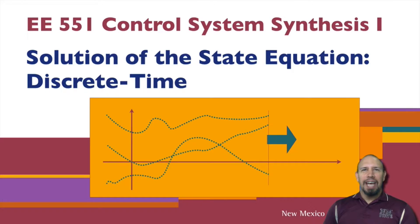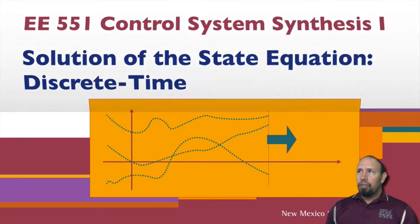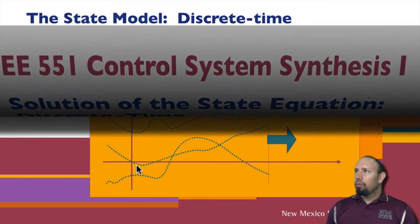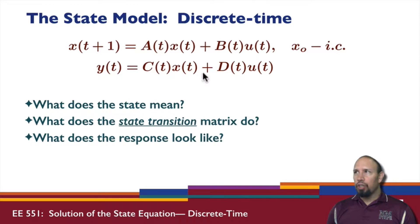In the last topic, we looked at the discrete-time state model. Now we're going to look at the solution to that discrete-time state model. Here's what the model looks like, and this is the linear time-varying version.